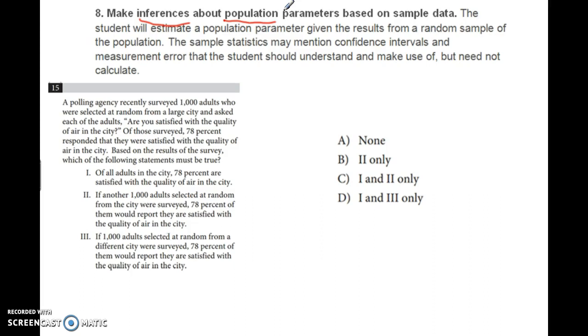In this case, a polling agency selected 1,000 adults at random from a large city. They were asked, 'Are you satisfied with air quality?' Based on the results, which statement must be true? One option says 78% of all adults in the city are satisfied with air quality. That's our estimate from the sample.